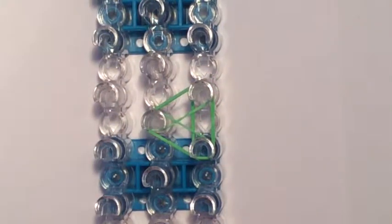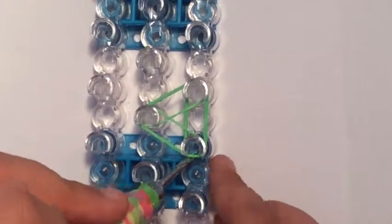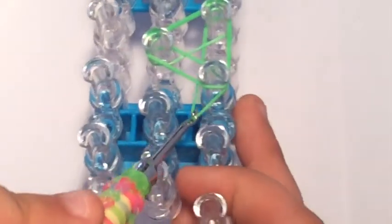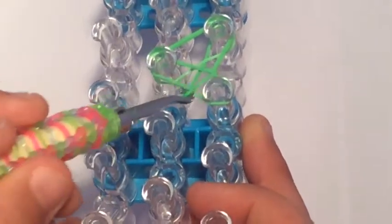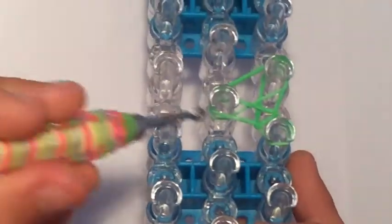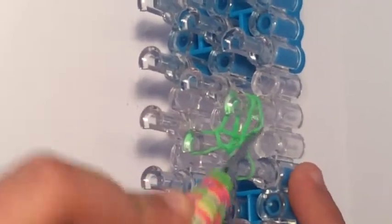Then we're going to start looping and this looping is very very simple. We're just going to take the band underneath and bring it over so it looks like that and we're going to do that on all three sides.